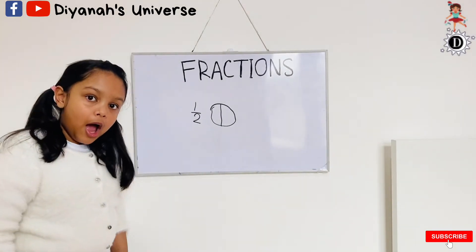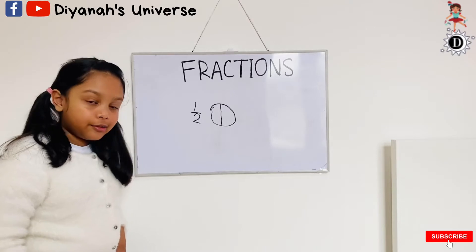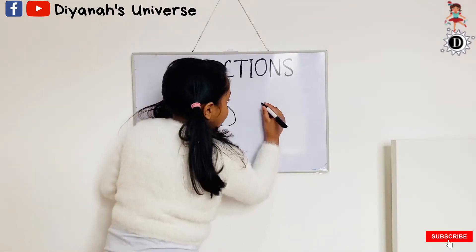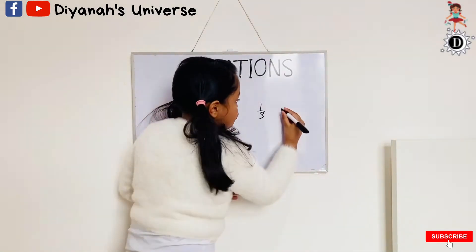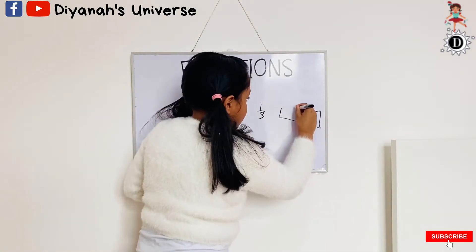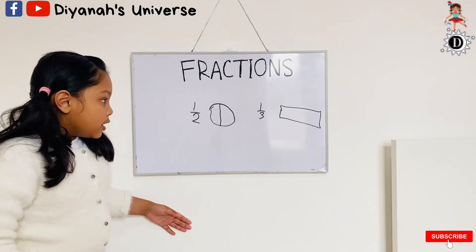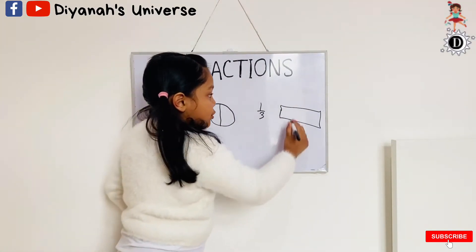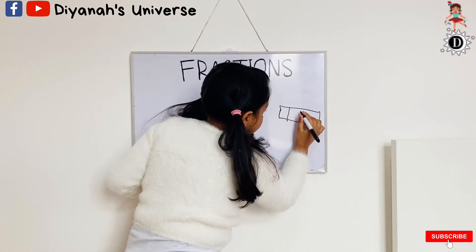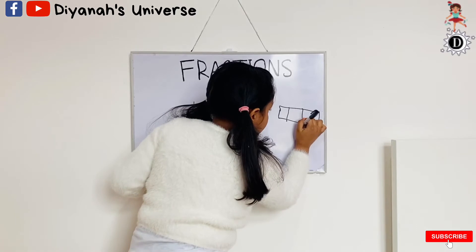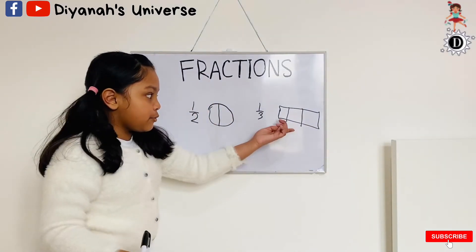And now I want to do a third — it is a fraction as well. So one third. I have a rectangle here and I want to divide it into three equal parts. So I'm going to do two lines for that: one equal part, two equal parts, and three equal parts.